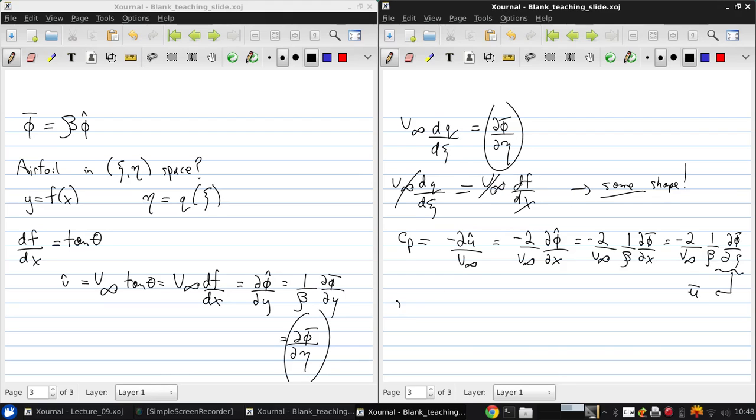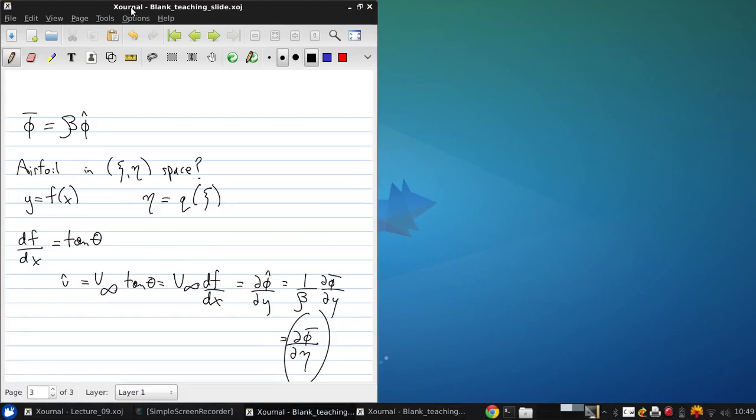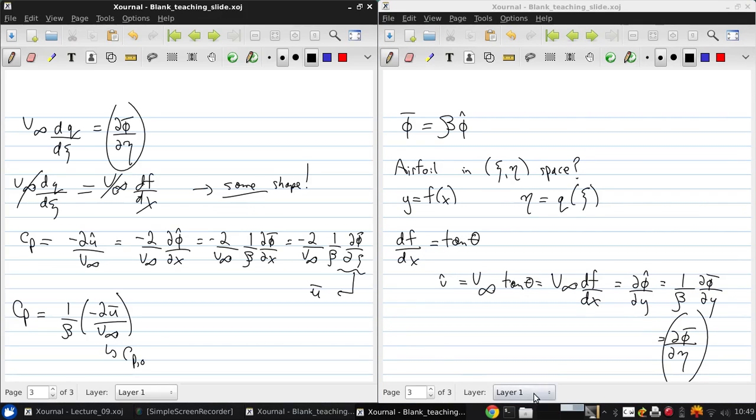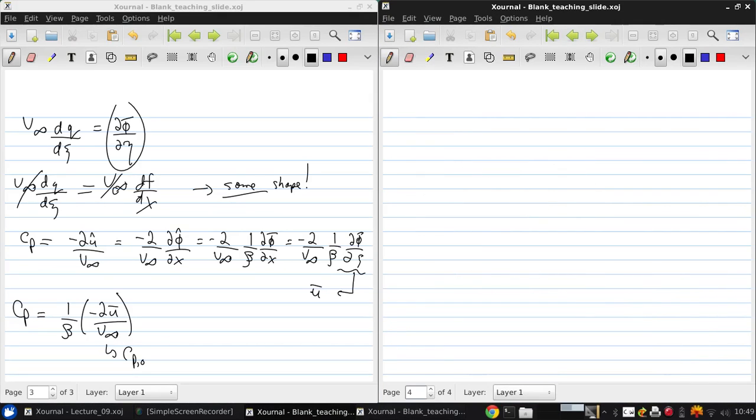So putting that together, what we get is that cp is just 1 over beta times negative 2 u bar over v infinity. But this term in the parentheses is just the linearized pressure coefficient for the incompressible flow. So we call this cp0.